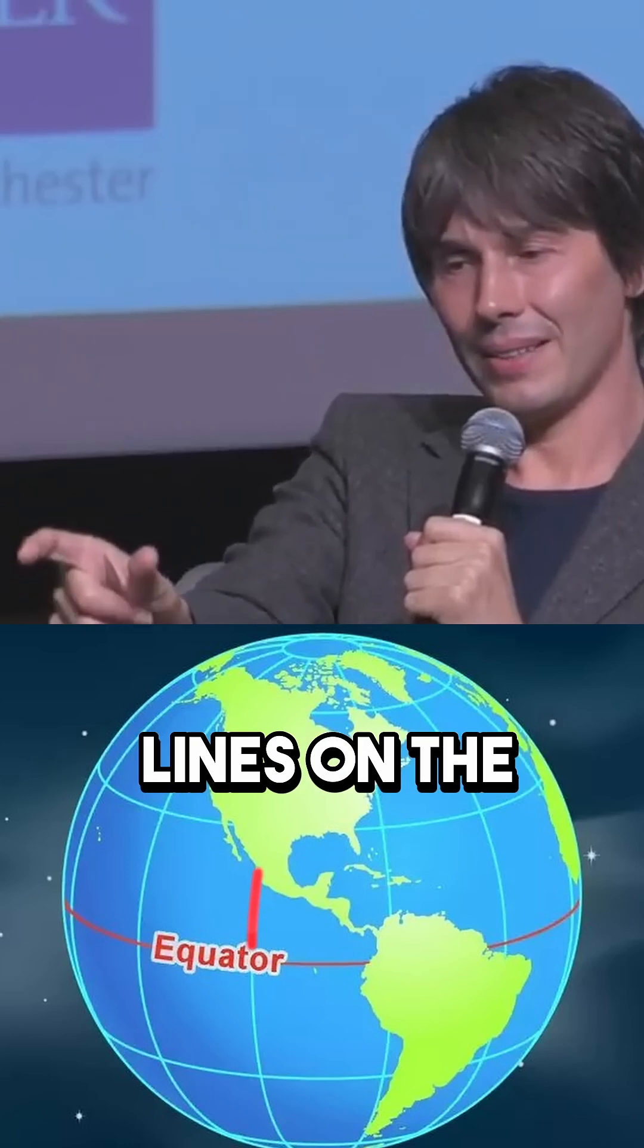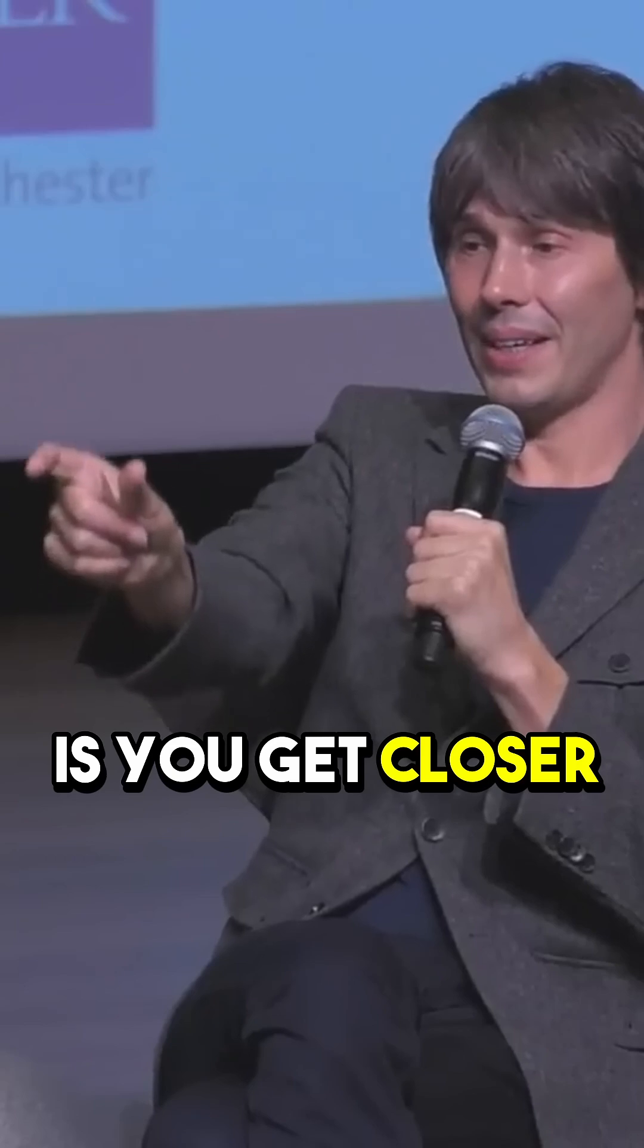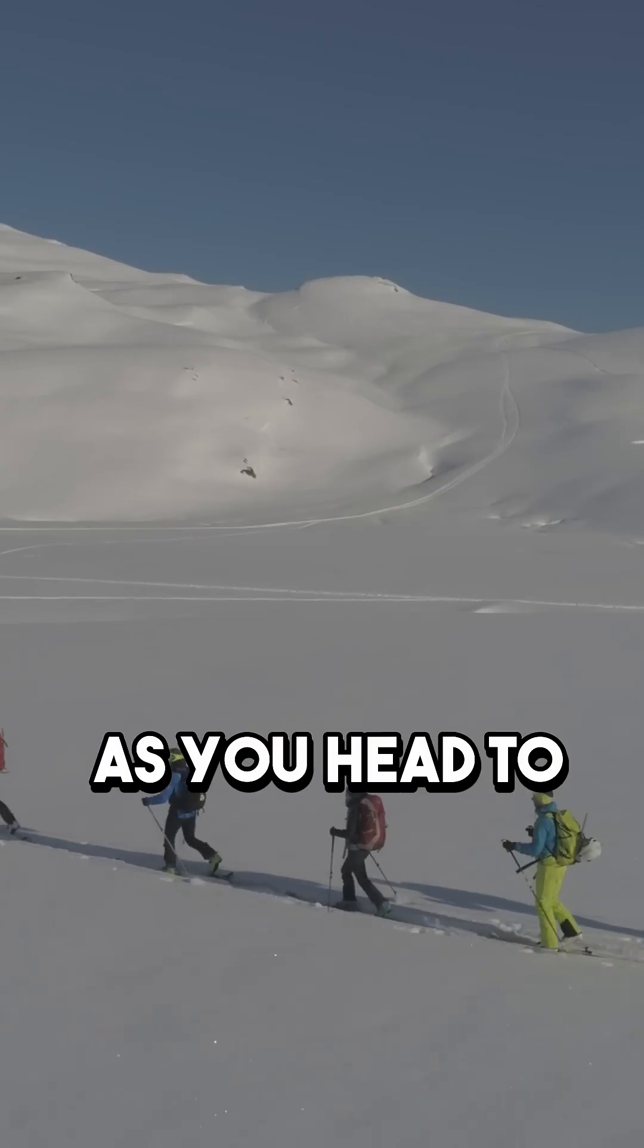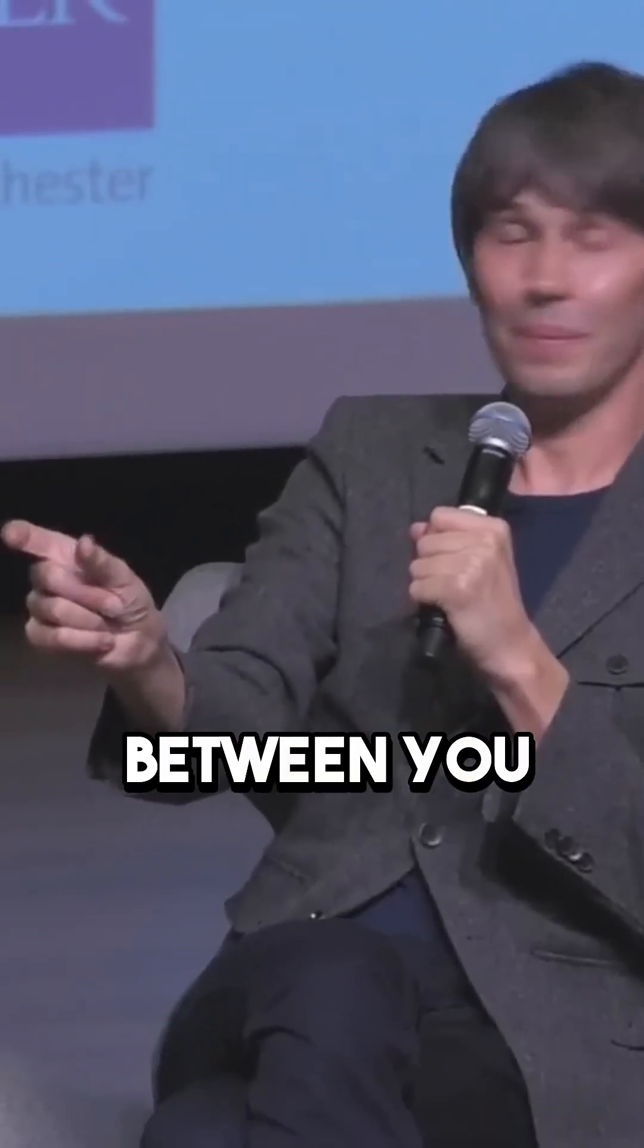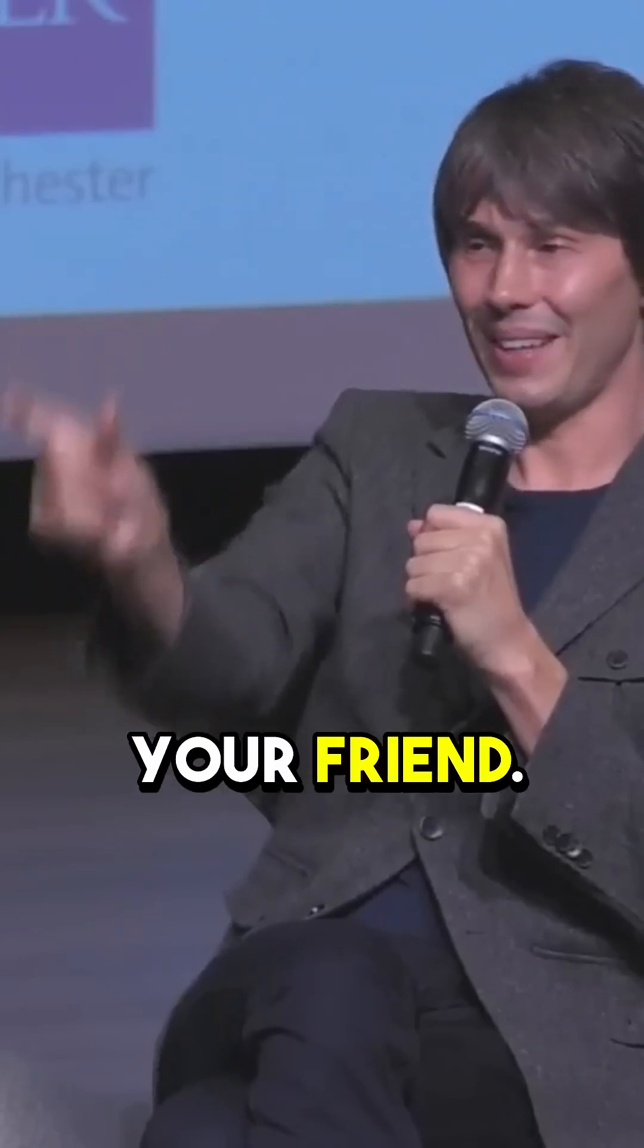Now the parallel lines on the surface of the Earth are lines of longitude. So what you find is you get closer to your friend as you head to the North Pole. And so if you didn't know that you were moving on a curved surface, you would conclude there was a force of attraction between you pulling you together because you were minding your own business, trying to walk parallel to your friend.